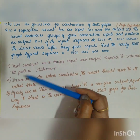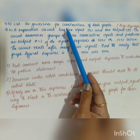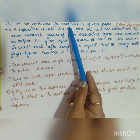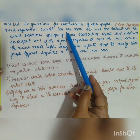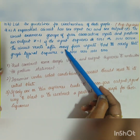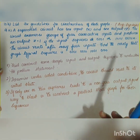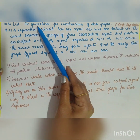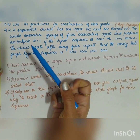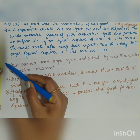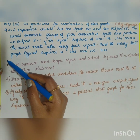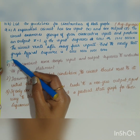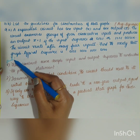Let us first see the answer to the first question: list the guidelines for construction of the state graph. This problem is an example of your state graph. These are the different steps that have to be followed, and this will be your answer for the first question.